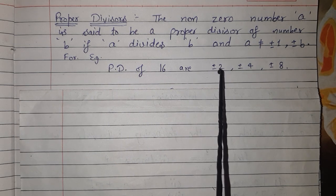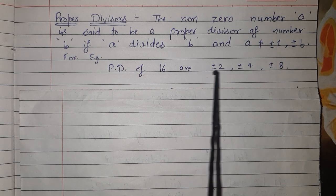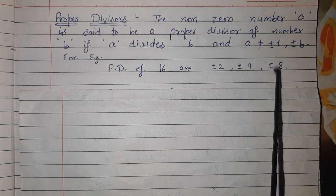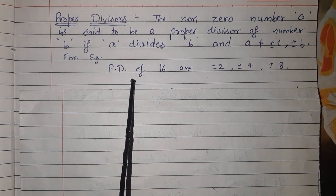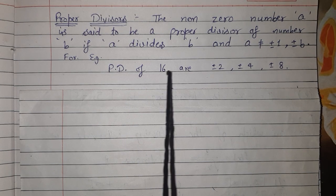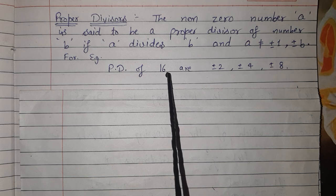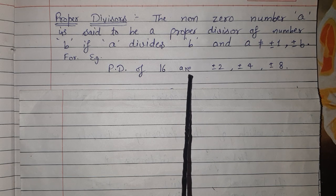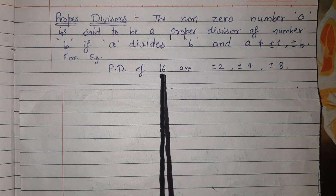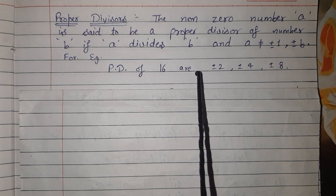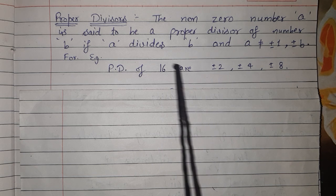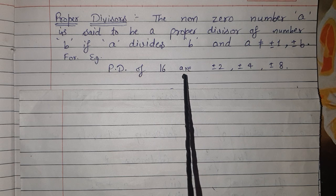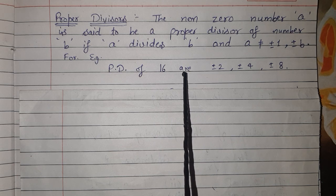Tab hum us number ko proper divisor kahenge. For example, the proper divisors of 16 are ±2, ±4, ±8. 16 ke divisors mein 1 bhi hai, −1 bhi hai, +16 bhi hai, −16 bhi hai, lekin ye proper divisors mein nahi aayenge. Inke alawa jo bhi divisors hain 16 ke, wo sabhi hamare proper divisors ban jaayenge.